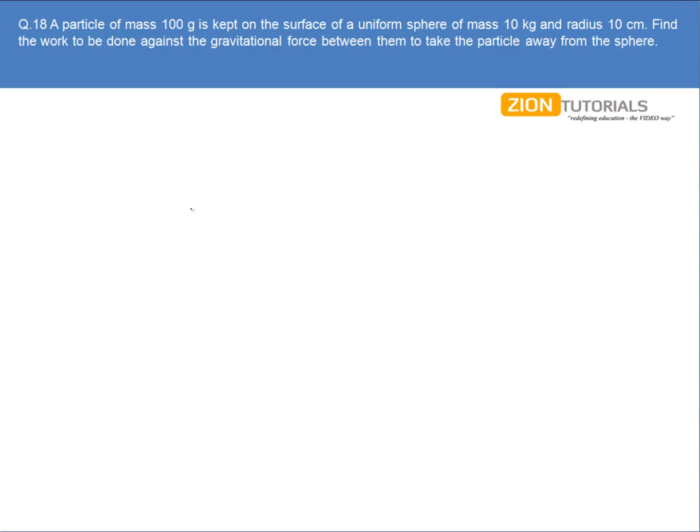Now if I want to take the particle away from the sphere, then I have to make its gravitational potential energy equal to zero, and that can be done if I perform some work on the particle. It is having some gravitational potential energy initially that is negative, and if I give the same amount of work to it, the net potential energy of the system will be zero.